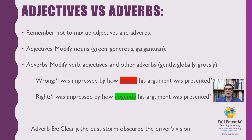Moreover, only adverbs can modify an entire sentence, as shown below. 'Clearly, the dust storm obscured the driver's vision.' The adverb 'clearly' describes the sentence and makes it obvious that the dust storm was obscuring the driver's vision — that adverb modifies the whole sentence. Bear in mind to use adjectives and adverbs in the correct way in order to have both modifiers work properly.